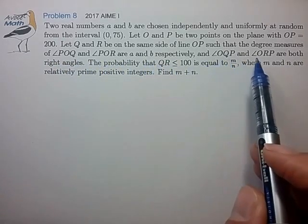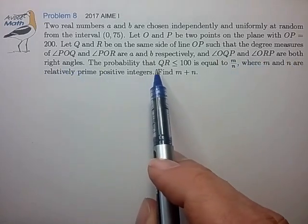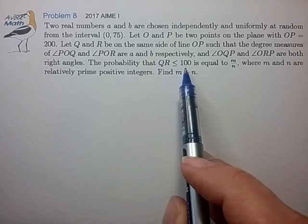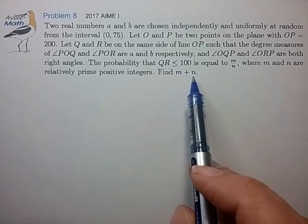Angles OQP and ORP are both right angles. The probability that QR is less than 100 is M over N, where M and N are relatively prime positive integers. Find M plus N.